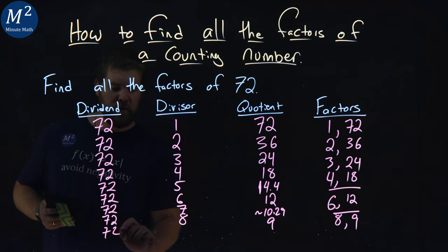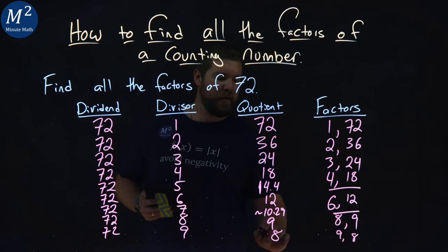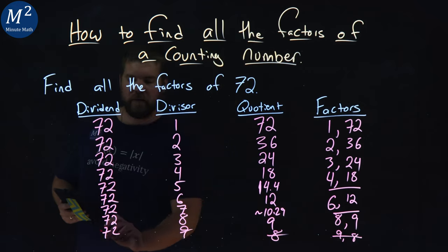So if I want to write that here, 72 and 9, this would be an 8. We'd have 9 and 8, and now we're repeating. So we don't need those.